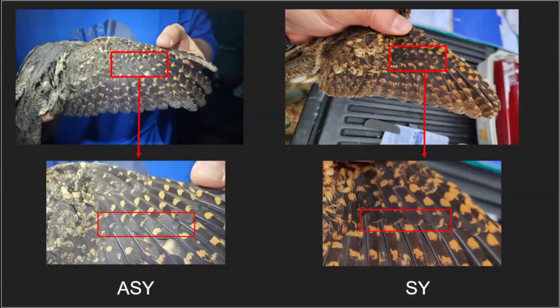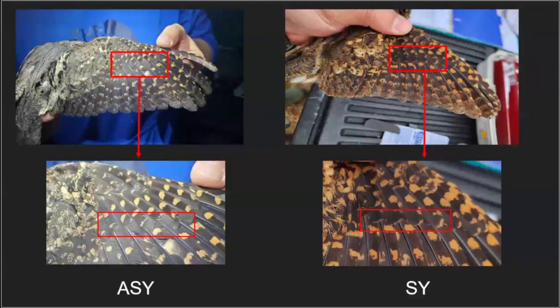Once we capture them, we take a bunch of measurements, and the first thing is aging them by looking at the feathers. In the left-hand picture, ASY means 'after second year' — at least its second breeding season. We look at the primary coverts, the feathers above the primary flight feathers, to see if they have any coloration on the tips. On the ASY bird, you can see that distinctive cinnamon tipping on each of the feathers, and that's how we determine the age of the birds.